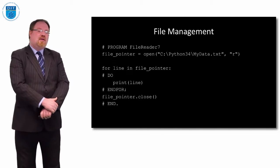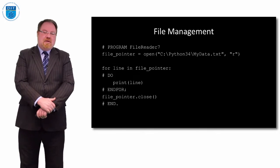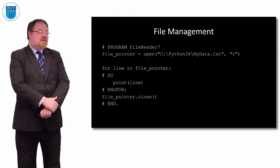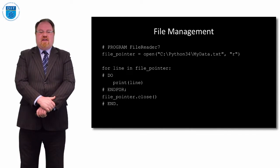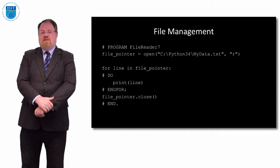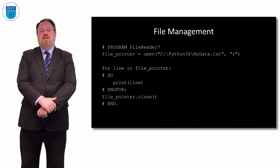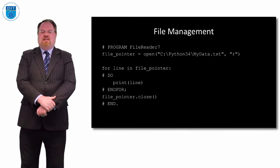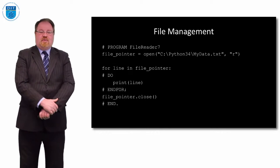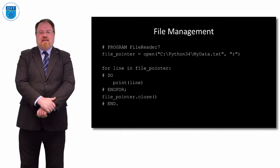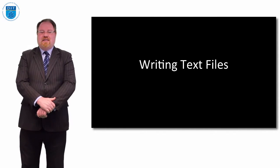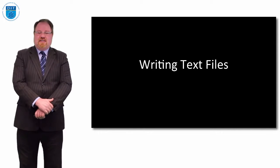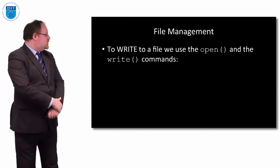Here's a program where we read each line of the file one at a time. We open the file for read, then use 'for line in file_pointer: print(line)', then close the file at the end. That's a very simple way of printing out all the lines in the file. We could also just use file_pointer.read() to print the whole file at once. Now let's move on to writing text files.